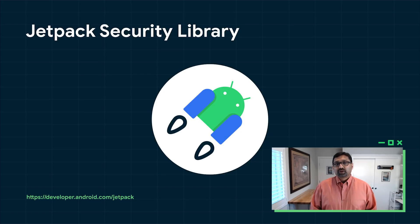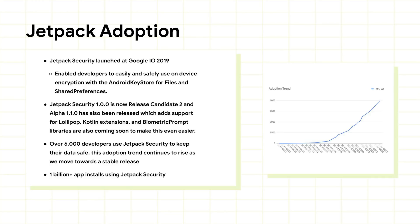Developers often use Q&A forums on the internet to implement common security constructs such as file encryption. We've discovered that there is a lot of incorrect cryptographic constructs recommended by the community, many of whom are not cryptography experts. We created the Jetpack Security Library to simplify these common workflows and create opinionated, cryptographically secure constructs for common operations. We're very proud to announce the availability of the 1.0 release of our Jetpack Security Library. Already, we're seeing massive adoption — more than 6,000 developers are using this today, including major companies.